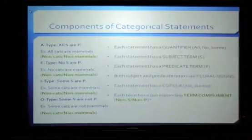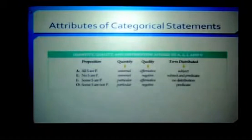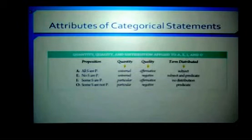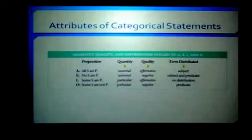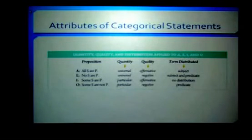Other than these components, categorical statements also have various attributes: quantity, quality, and term distribution. When talking about quantity, we ask whether statements are universal or particular. When talking about quality, we ask whether they are affirmative or negative. When talking about distribution, we ask whether the subject or predicate terms are distributed. We'll focus for now on quantity and quality.